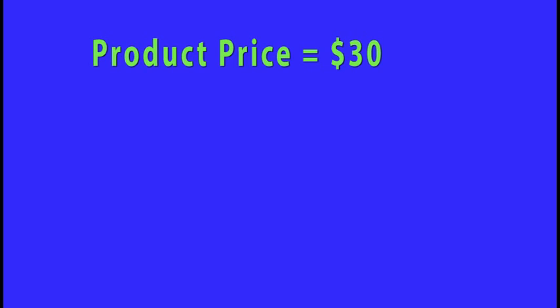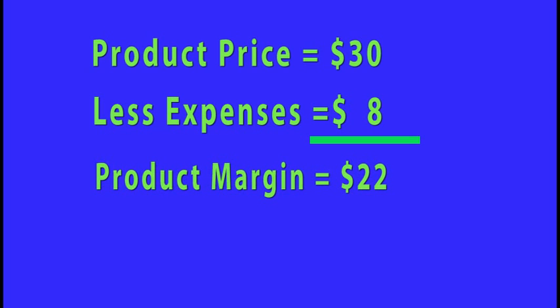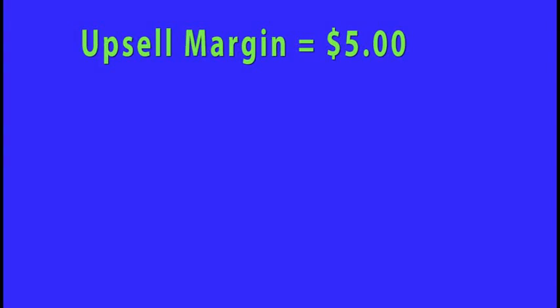For instance, if you sell an exercise device for $30, and except for your media, your selling and manufacturing expenses per device amount to $8, then your margin is $22. Now, if you also offer an upsell, such as a DVD, and the margin for the DVD is $5,